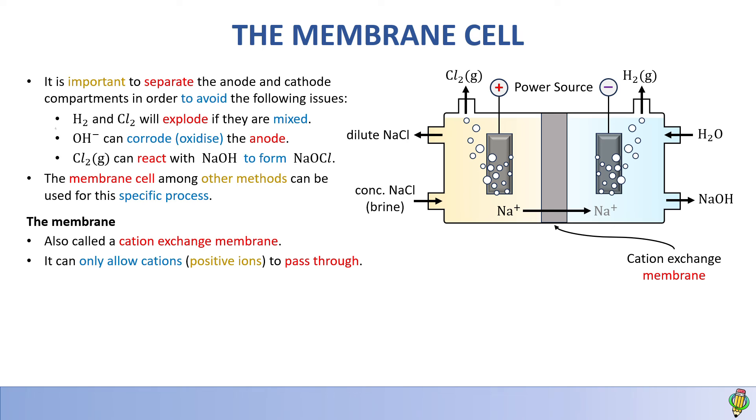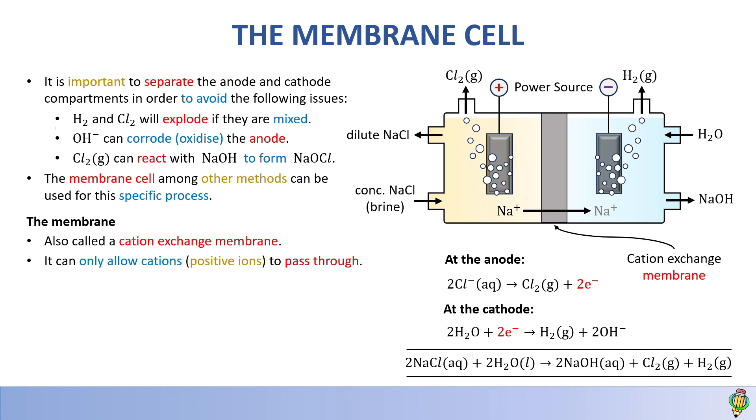Now we can write the half reactions. At the anode or brine compartment: 2Cl- → Cl₂ + 2e-. At the cathode or water compartment: 2H₂O + 2e- → H₂ + 2OH-. Canceling electrons gives the net ionic reaction. Sodium ions migrate through the membrane to the cathode compartment to form sodium hydroxide. Neutrality is maintained in both parts of the cell.